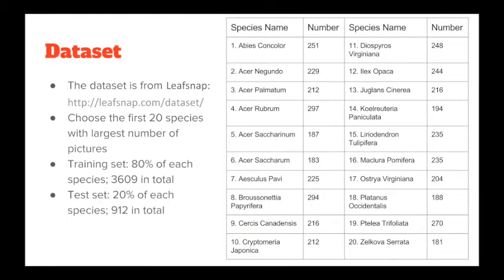We get our dataset from LeafSnap, a mobile app which helps identify tree species from photographs of their leaves. Its developers released their dataset online. We choose 20 species from it with the largest numbers of images. The names of the 20 species and the number of pictures are listed in the table. For each species, we randomly choose 80% of the pictures to be the training set and the rest 20% to be the validation set.